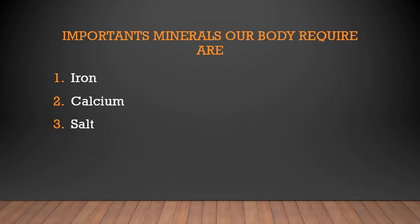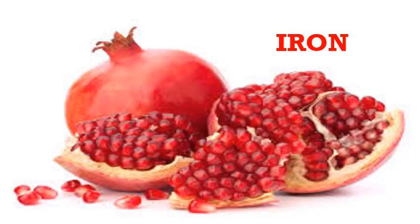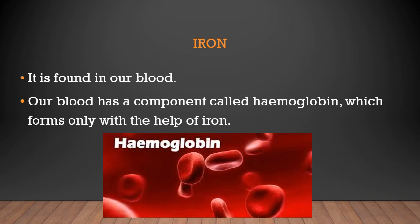Iron, calcium (C-A-L-C-I-U-M), and salt — you all use salt every day. Iron and calcium will be new for you. Starting with iron: this is not the iron box we use every day — this iron is a mineral. It is found in our blood. Our blood is red in color because of the presence of a component called hemoglobin (H-A-E-M-O-G-L-O-B-I-N), which is formed only with the help of iron.